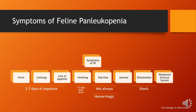Symptoms appear two to seven days after exposure. These include fever, lethargy, and loss of appetite. Within one to two days after the fever, vomiting and diarrhea may appear — sometimes hemorrhagic, which is why the disease is also called viral enteritis. Anemia, dehydration, and a weakened immune system result from low WBC levels in the blood.